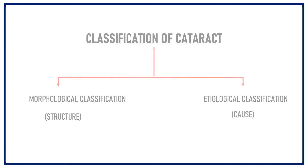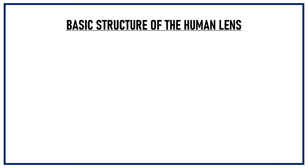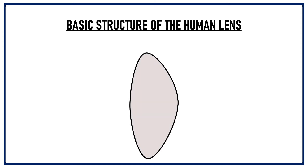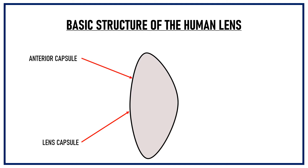To understand this, we need to first understand the basic structure of the human lens. The outermost layer of the lens is known as the lens capsule. The lens capsule has an anterior surface and a posterior surface — this is the anterior capsule and this is the posterior capsule. The central-most part of the capsule is known as the pole.